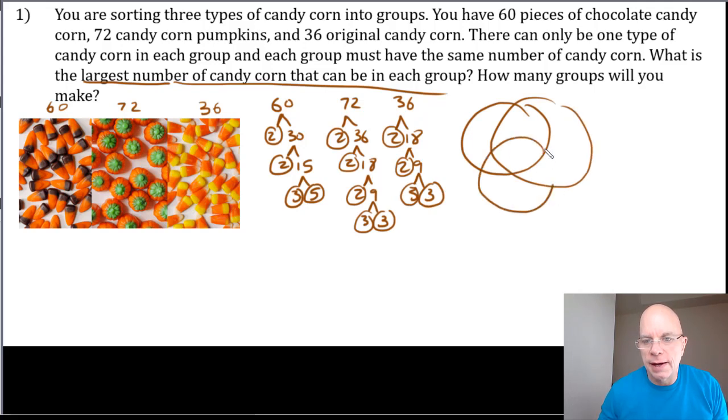Making a triple Venn diagram for 60, 72, and 36, and keeping in mind something we talked about in class that for these word problems it's helpful to not only label the circles in your Venn diagram with the number but also what they represent. So this 60 is the chocolate candy corn, the 72 is the pumpkin candy corn, and the 36 are the original types of candy corn.